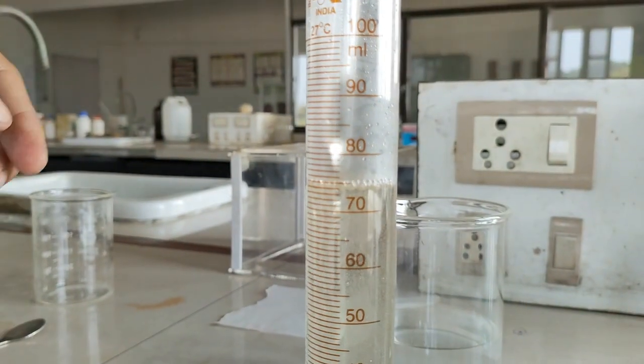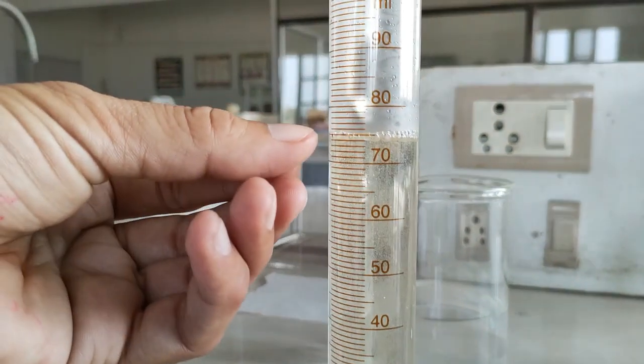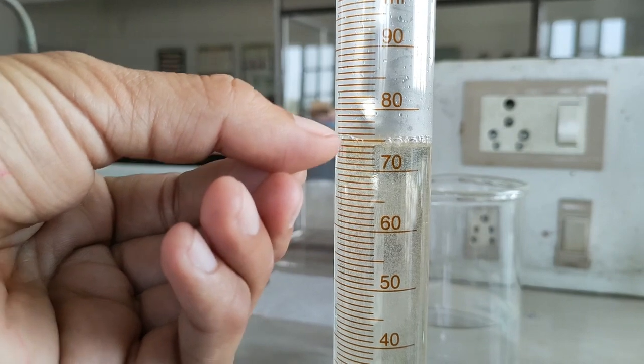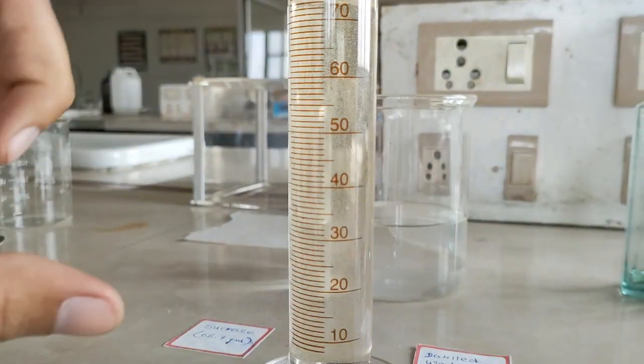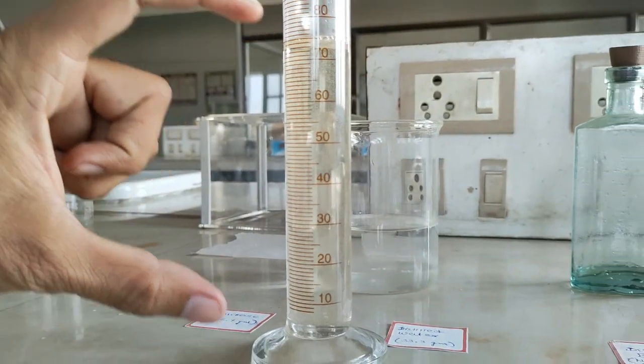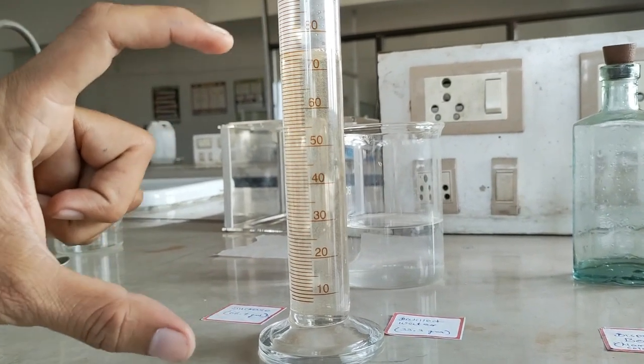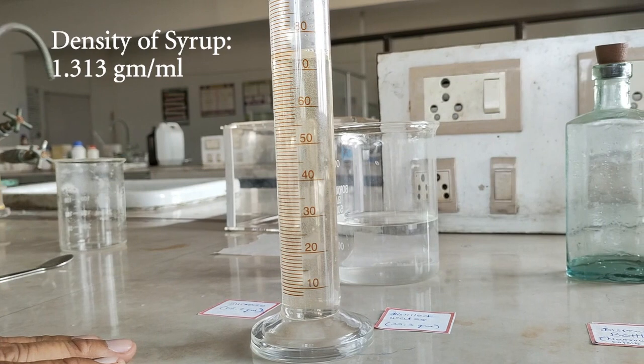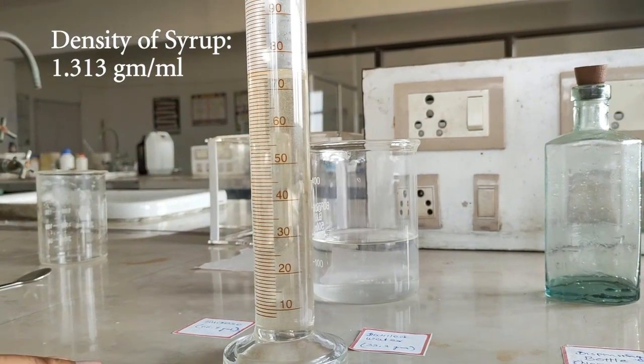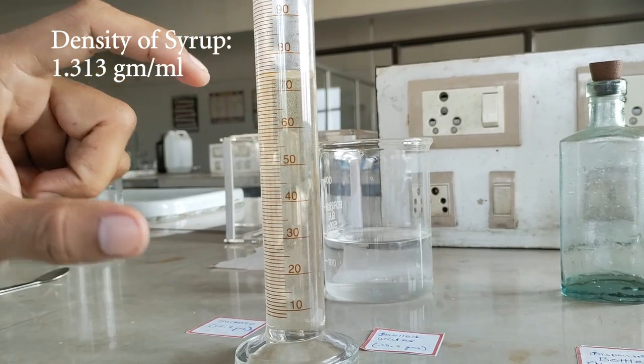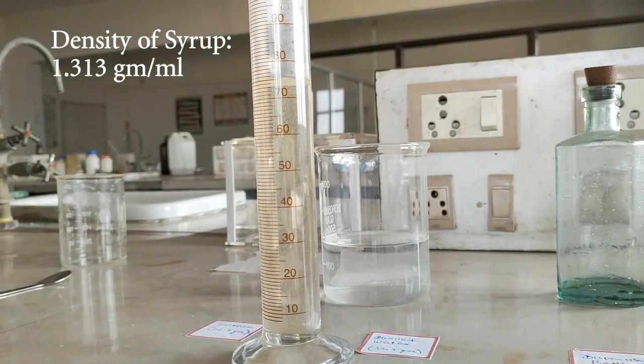Now you can see we got approximately 75.1 ml of syrup. The 75.1 ml of syrup is equal to 100 grams of syrup because the density of syrup is 1.313 gm/ml. That's why we got 75.1 ml, but it is equal to 100 grams of syrup.